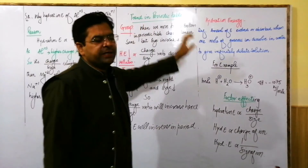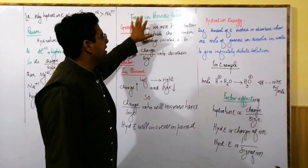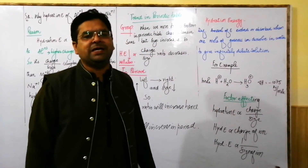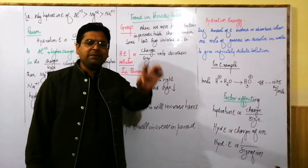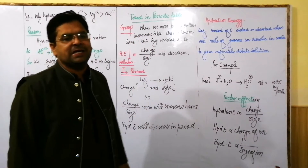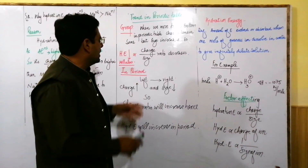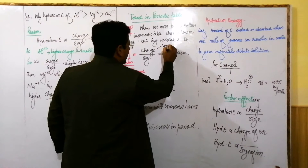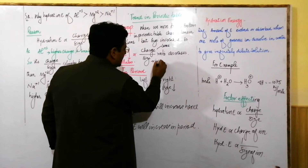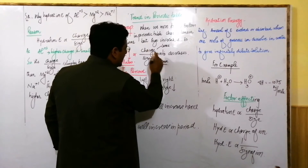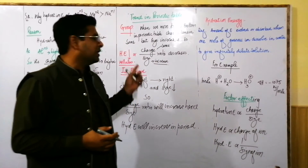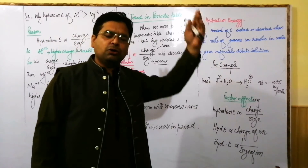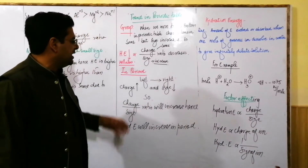Now let's look at the trend in the periodic table. When we move top to bottom in a group, the valence shell electrons remain the same, so charge remains the same. But size increases. If charge remains the same and size increases, the overall charge-to-size ratio decreases, so hydration energy also decreases going down a group.